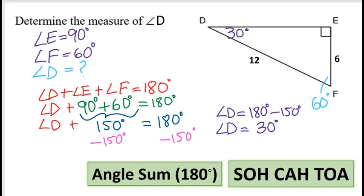Remember, there are two ways to solve angles in a right triangle. If you know two angles, you're going to use the angle sum theorem. If you only know one angle, then you will use SOHCAHTOA. If you want to learn how to find the sides of a right triangle, check out my videos in the description below. Thank you for watching, and don't forget to hit subscribe so you don't miss any of my future tutorials.